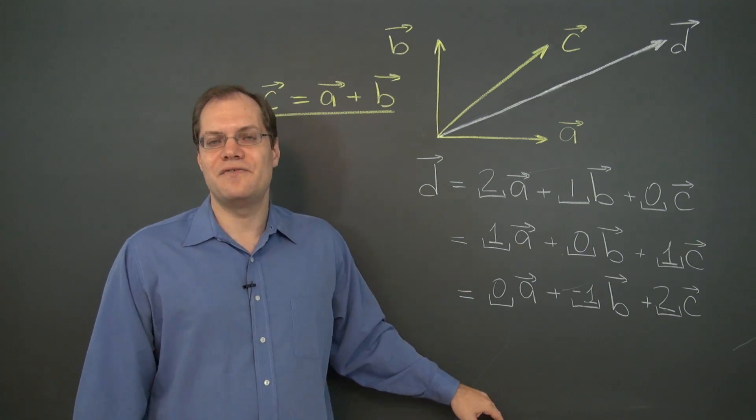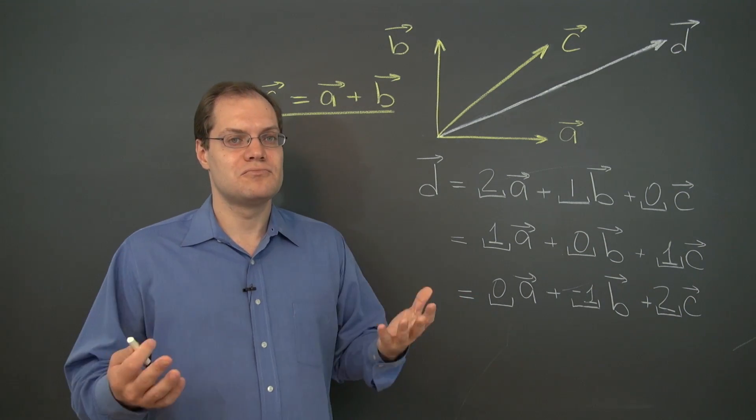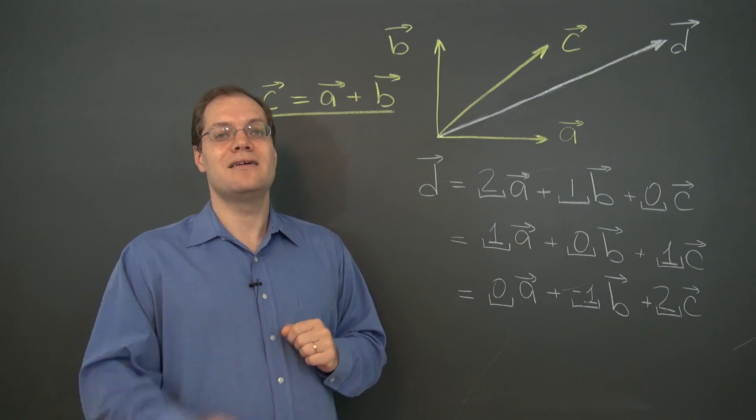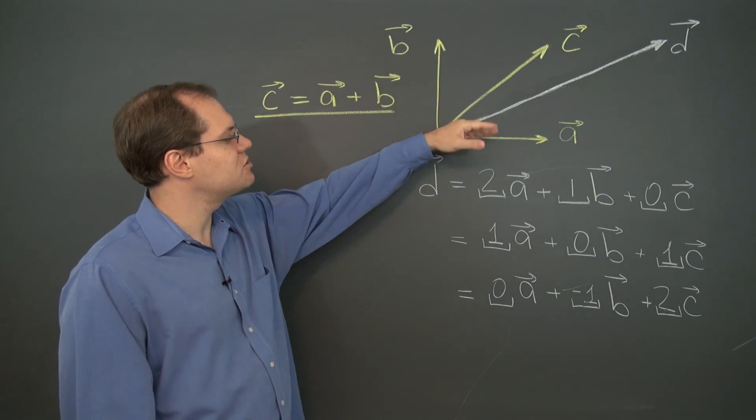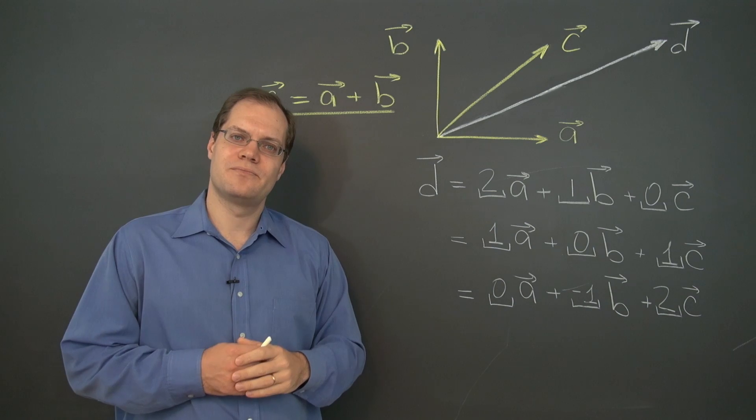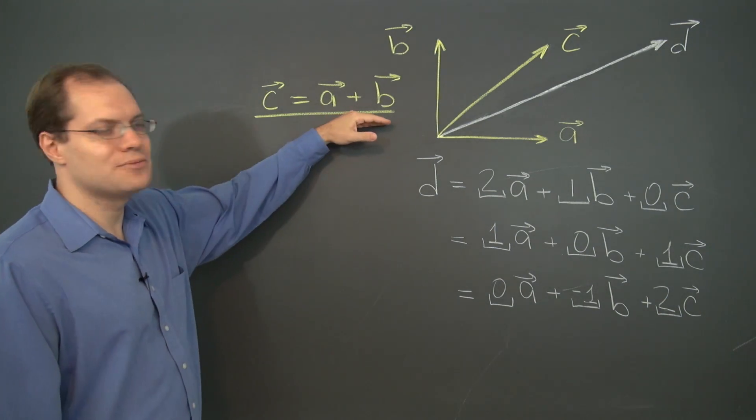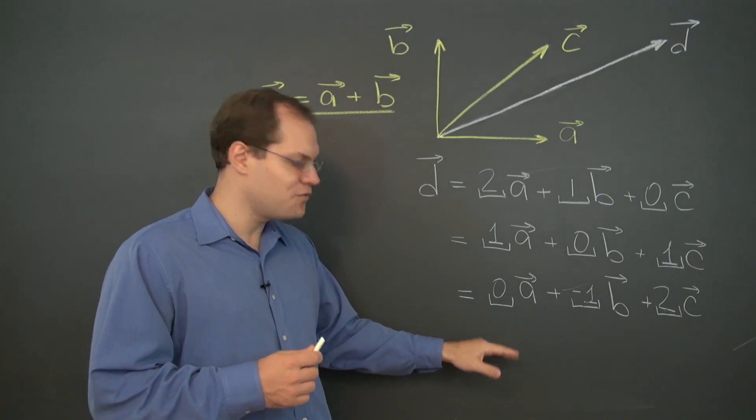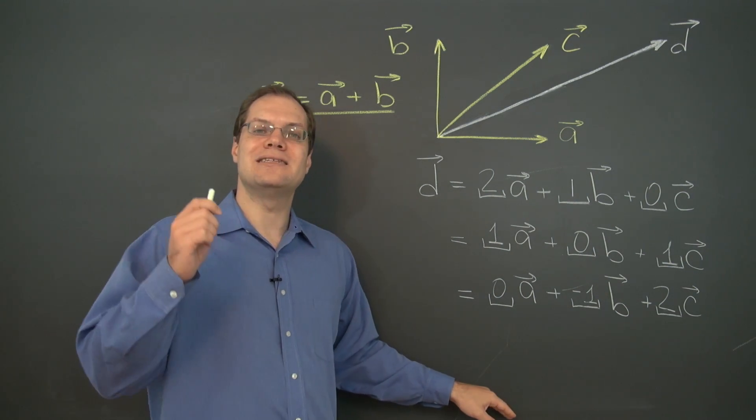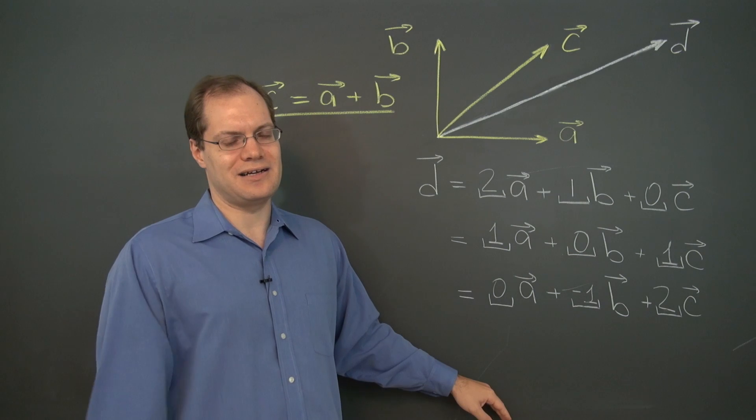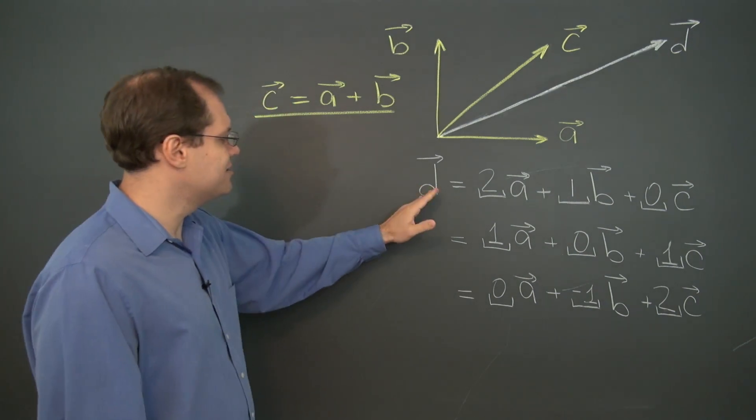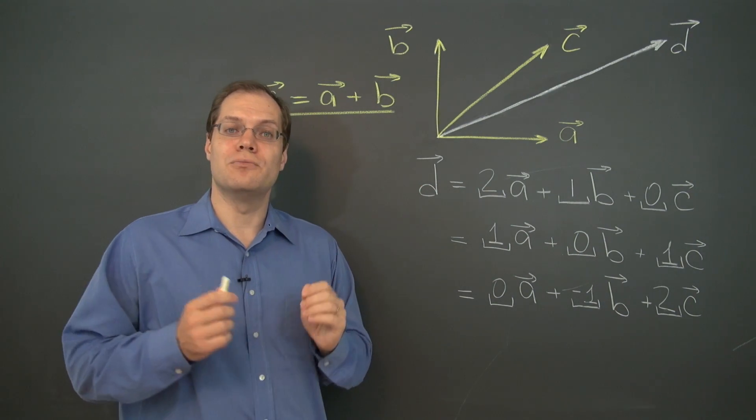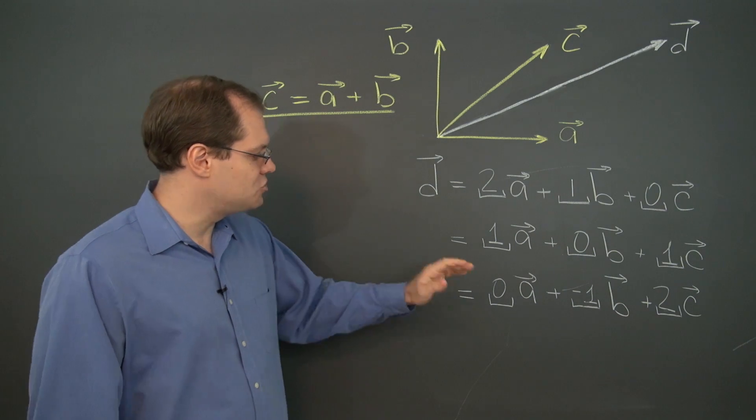But a fourth and a fifth would have proven challenging. But then we observed a special relationship between the vectors a, b, and c. We expressed that algebraically. And once that happened, we came up not with four or five, but immediately with infinitely many linear combinations that yield the vector d.